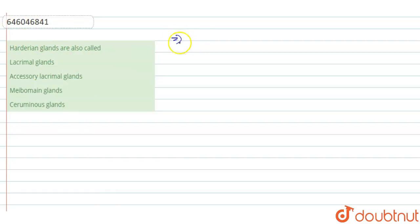These Harderian glands are known by other names called Harder's lacrimal glands, lacrimal glands.